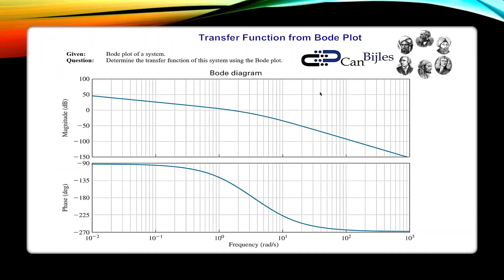What is given? We have the following Bode diagram given and we would like to determine the transfer function. What you recognize here is that there is no DC gain — so there's a different situation. We will also consider this for the first time in this example. I will zoom in on this Bode diagram and we will see the full picture in the next slide.